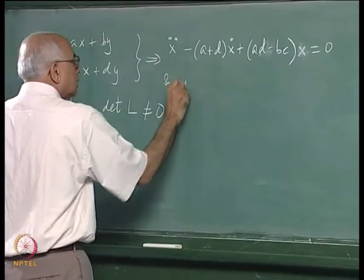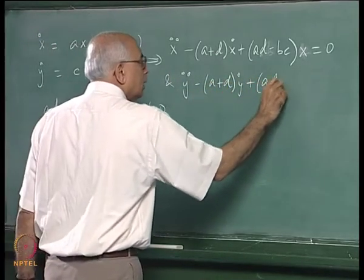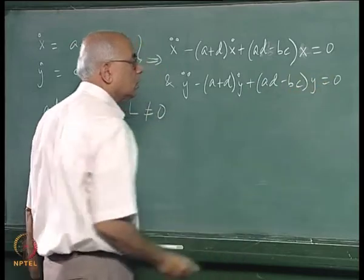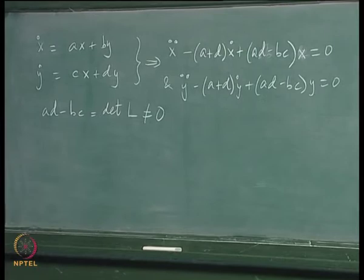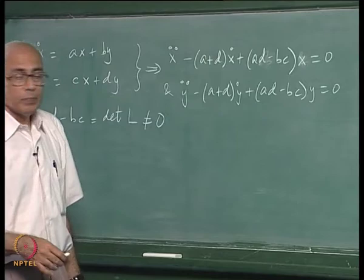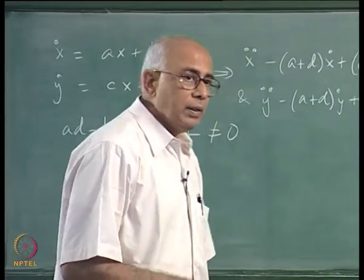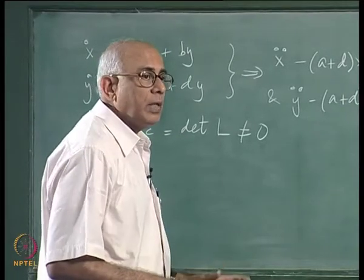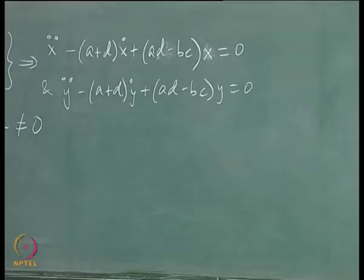Similarly, y-double-dot minus (a+d)y-dot plus (ad - bc)y = 0. x and y differ in their initial conditions, giving different combinations of e^(λ₁t) and e^(λ₂t). If λ₁ happens to equal λ₂, the solutions are linear combinations of e^(λt) and te^(λt). We are now going to analyze the stability of the equations depending on what the eigenvalues of L look like.